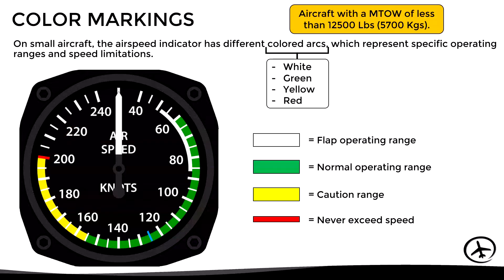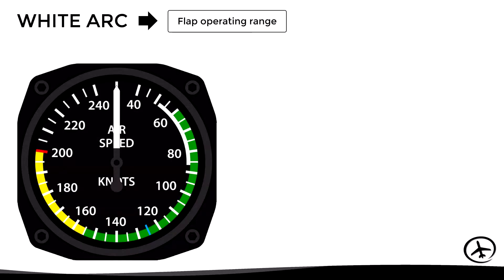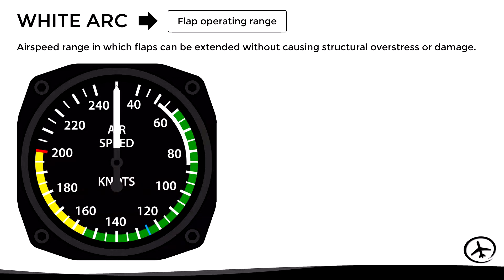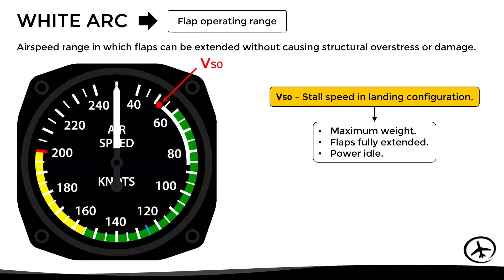The white arc represents the flap operating range — the speed range in which the flaps can be operated without causing any structural damage or overstress. The speed at which the white arc starts is the VSO, which is the stall speed of the aircraft in landing configuration. This is normally determined under the following conditions: maximum certified weight, flaps fully extended, and power idle.